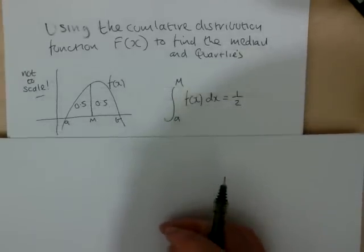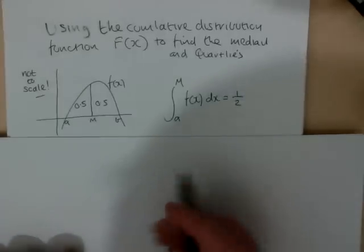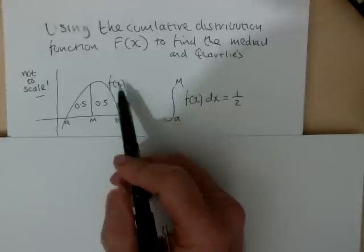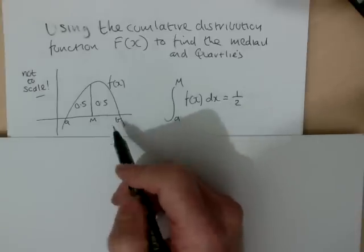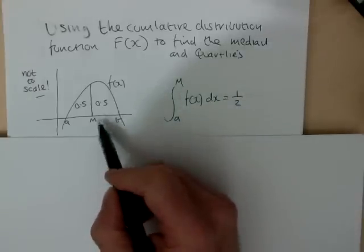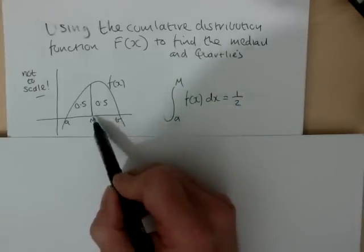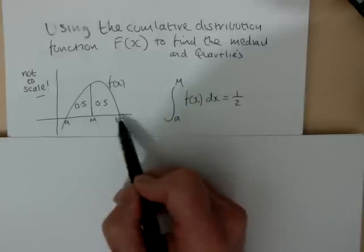Have a look at my diagrams. We know from previous work that with our probability density functions, the area under the curve comes to 1, and what we're introducing in this particular video is that the median value will be within the range a and b,